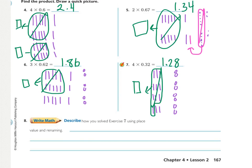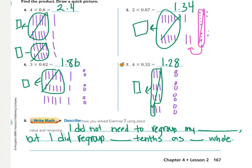Number eight, describe how you solved exercise seven using place value and renaming. Basically they're asking you to describe what you did in exercise seven with your quick drawing. Using this sentence frame, I did not need to regroup my hundredths, but I did regroup ten tenths as one whole. If you wrote your own sentence that basically says the same thing, you're good to go.